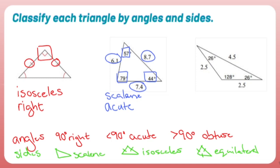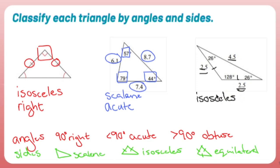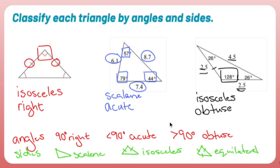Last but not least, we have this triangle where one side is different, but these two sides are exactly the same — so we have ourselves another isosceles. What makes this one different is that one angle is greater than 90, which means this triangle is obtuse. The types of triangles we covered were right, acute, and obtuse — we didn't hit equilateral. Equilateral and isosceles are distinct; this is as specific as we can get.